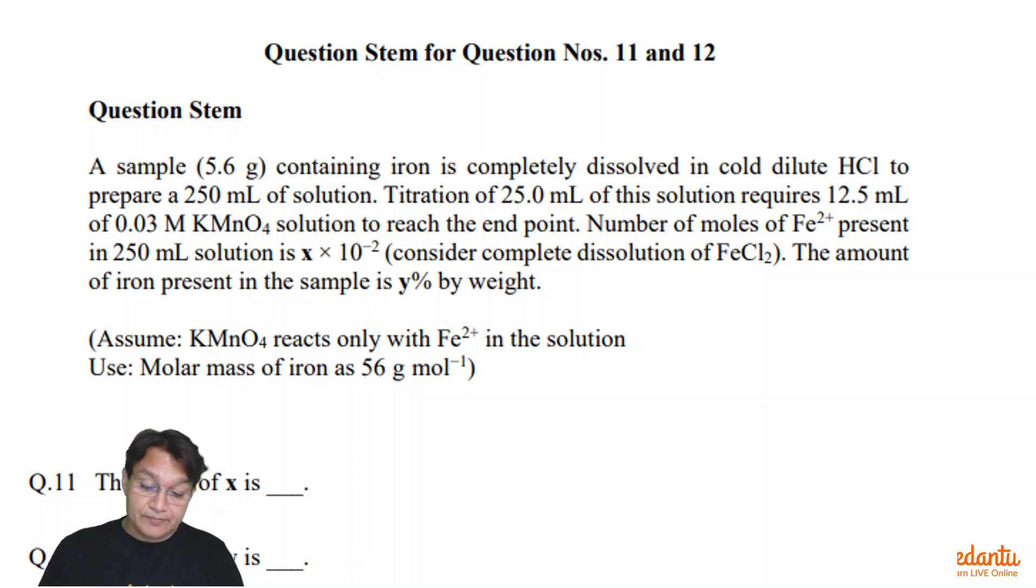Sample of 5.6 grams of iron, which is 5.6 upon 56, which is 1 by 10 mole of iron, which is equivalent to 100 millimole, and this is completely dissolved in cold dilute HCl to prepare 250 ml of this solution.